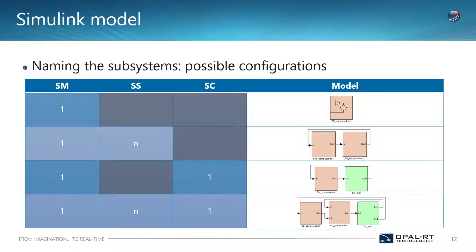So here you can see the first computational subsystem is SM underscore any name. If you need to create more than one computational subsystem, name them SS underscore any name, and SC underscore any name for the input and output part. All the blocks of all subsystems are connected to each other, and you have to connect one outcome block with them.